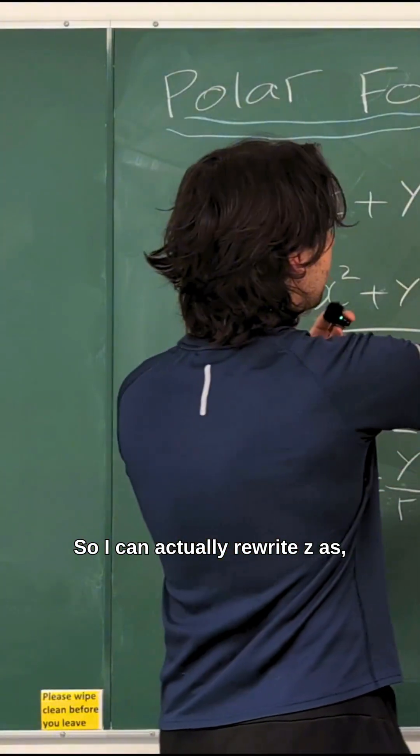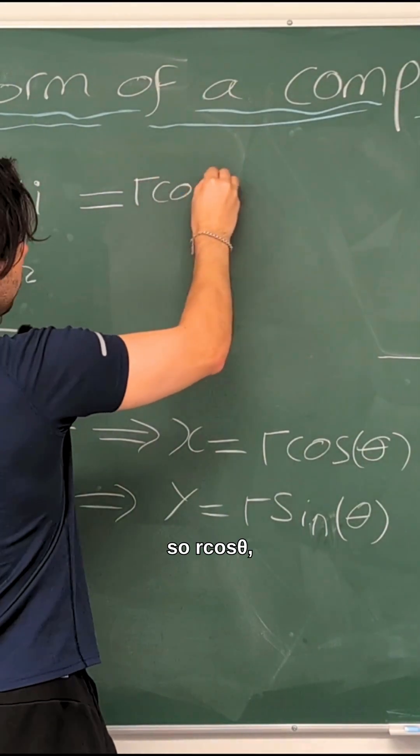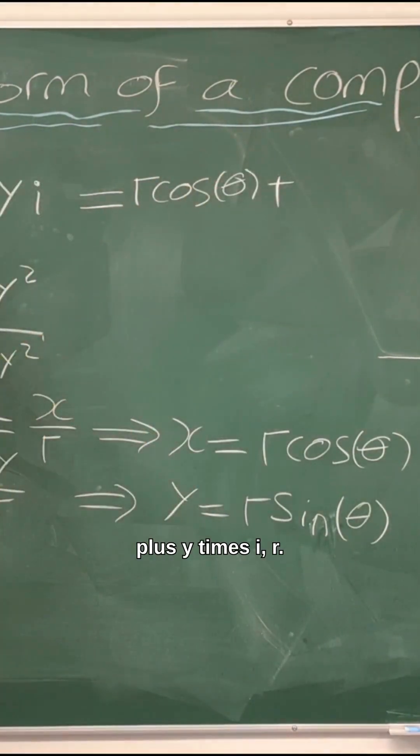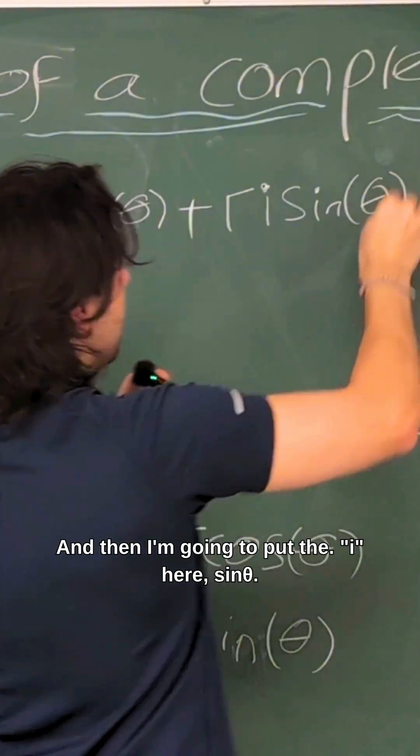So I can actually rewrite z as x, which is r cos theta, so r cos theta plus y times i. That's r and then I'm going to put the i here, sine theta.